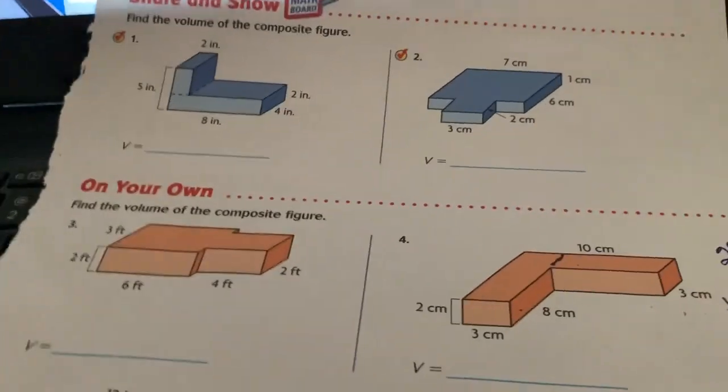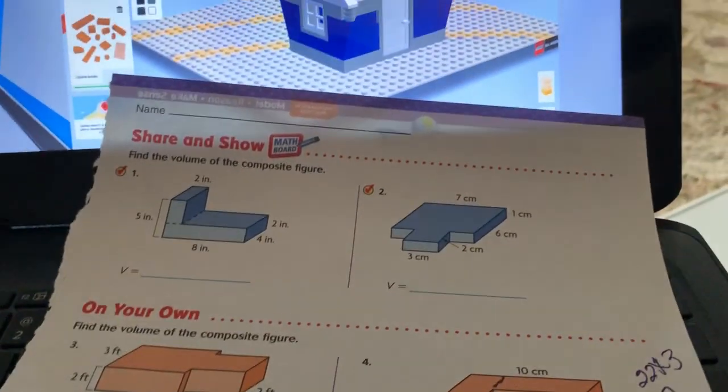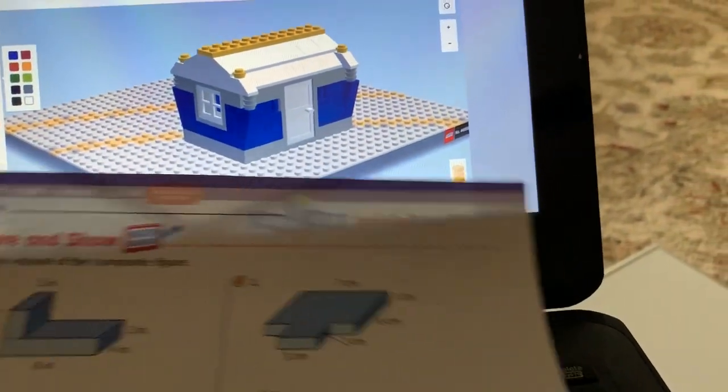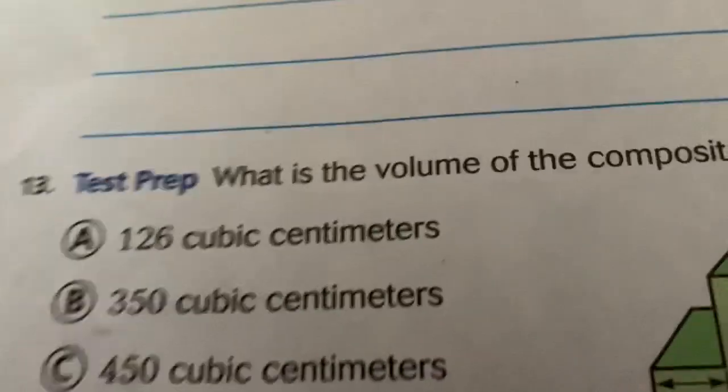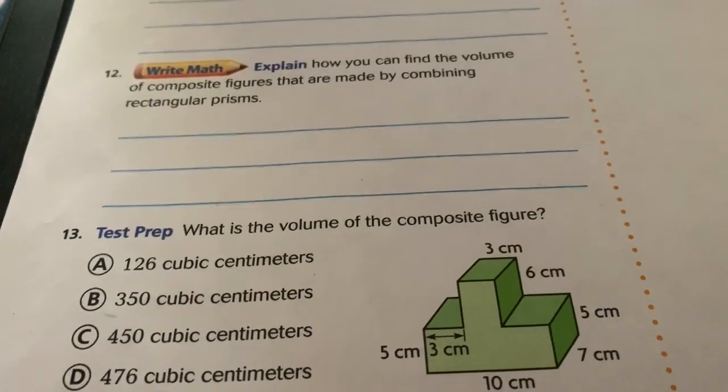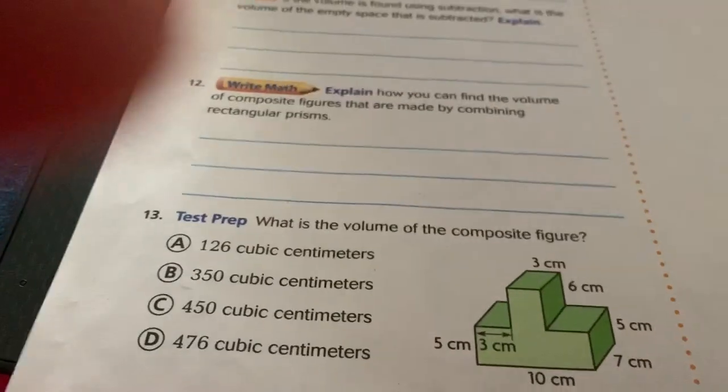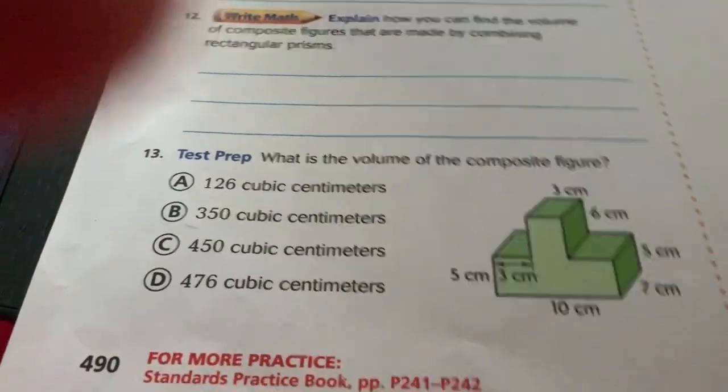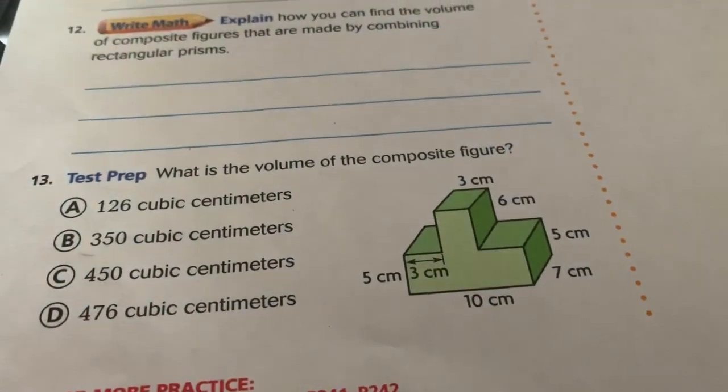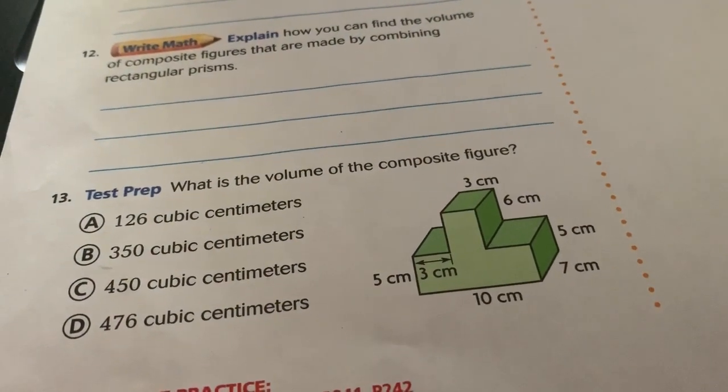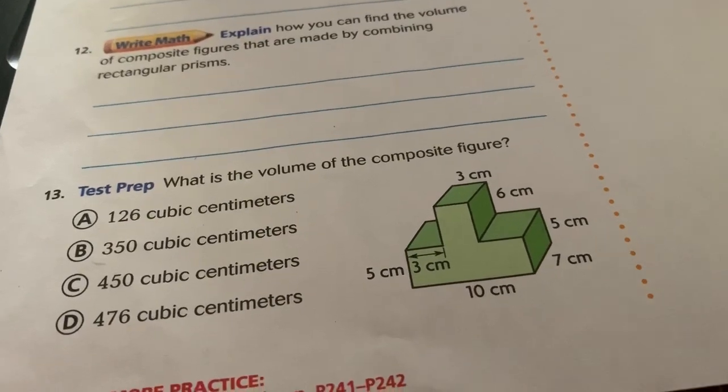Okay, now for the first example that I gave you, this one right here, let's go back to it. Your answer, if you chose D: 476 cubic centimeters, you did it correctly. That means you separated your rectangle at the bottom and you did 10 times 7 times 5.